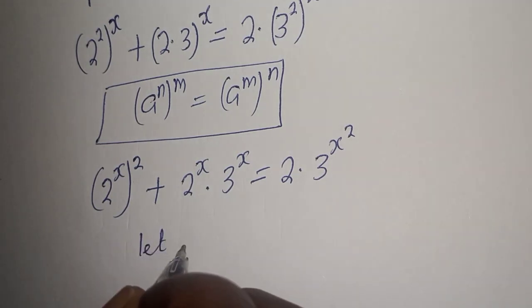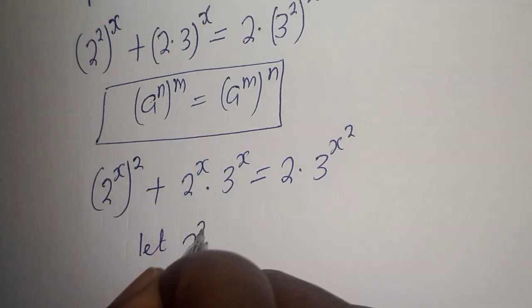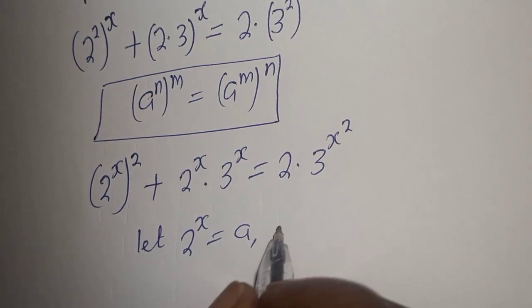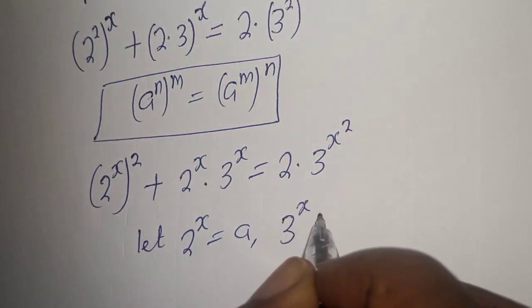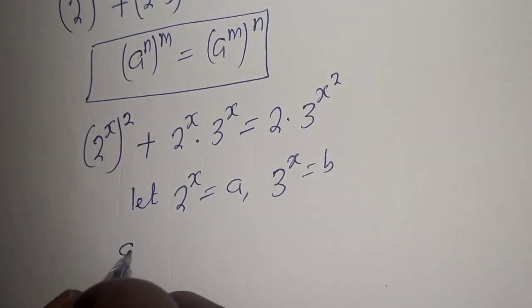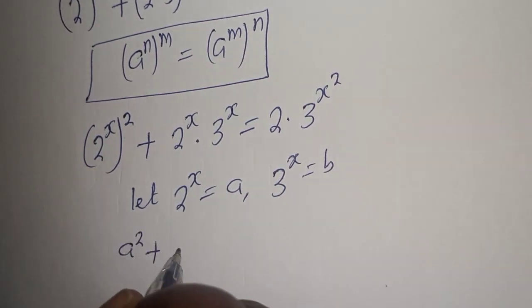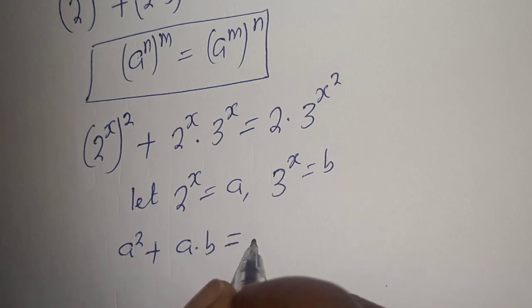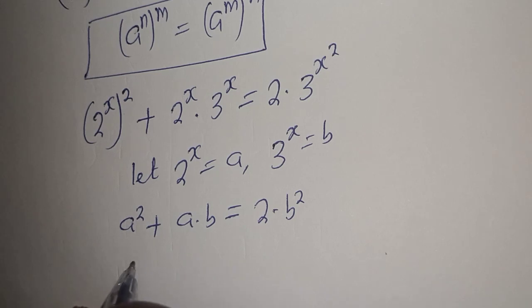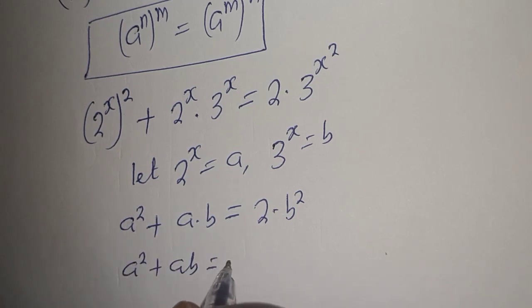Now let's set 2 raised to power s equal to a, and 3 raised to power s equal to b. So this becomes a squared plus a multiplied by b is equal to 2 multiplied by b squared.